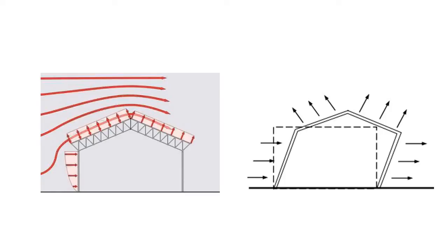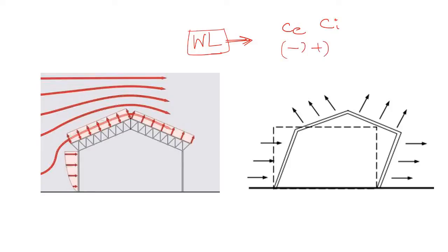If you have ever designed any steel structure, you know that to design it we need to calculate different types of loads. One very important load is wind load. The main problem I have realized is that during calculation of wind load we need to deal with lots of coefficients — like external coefficient, internal coefficient — and they have some sign convention, some positive, some negative. So it's a little bit confusing.